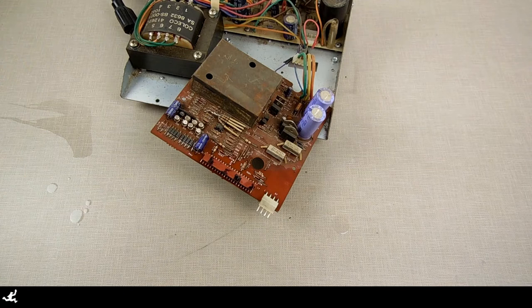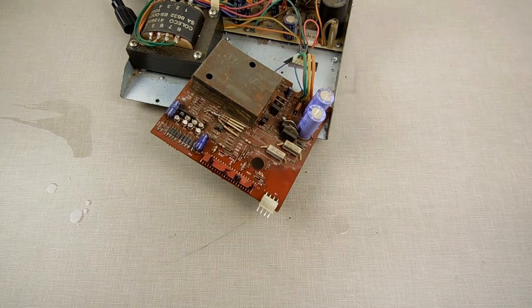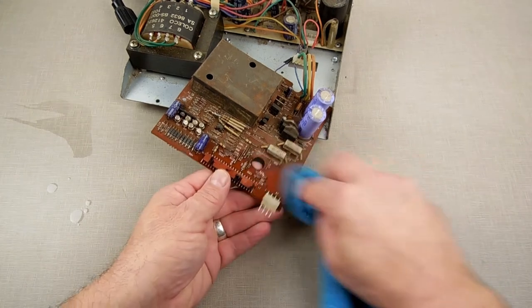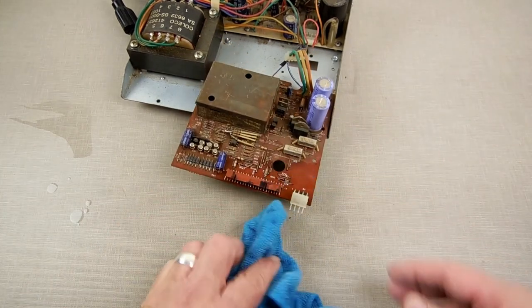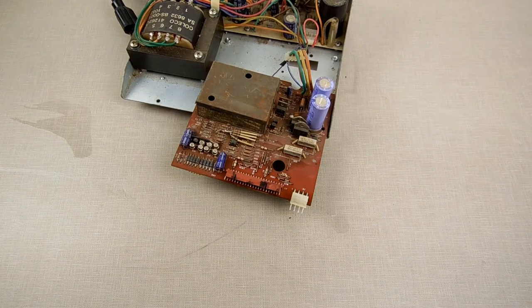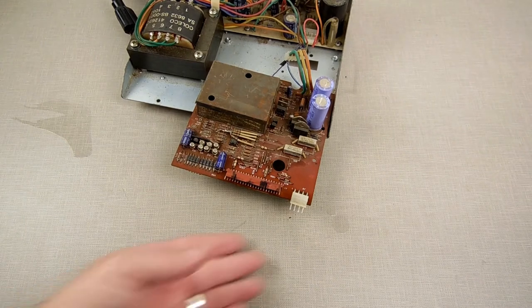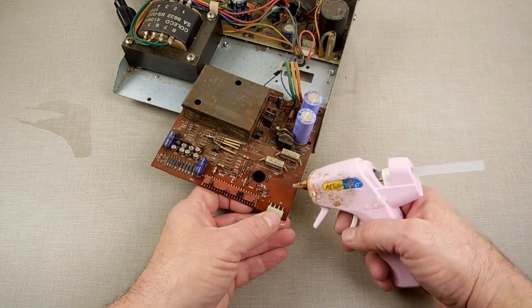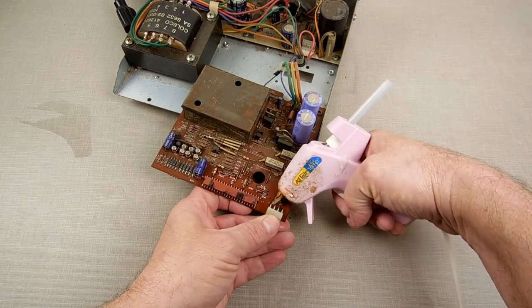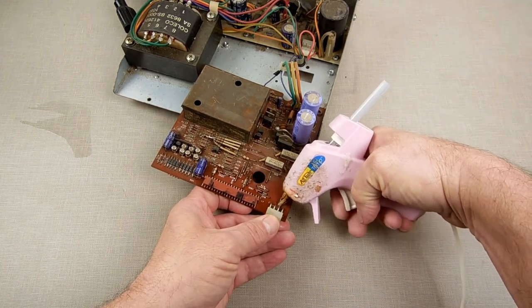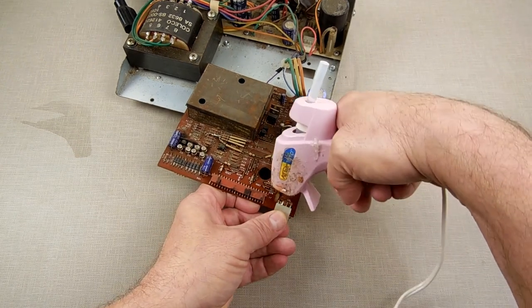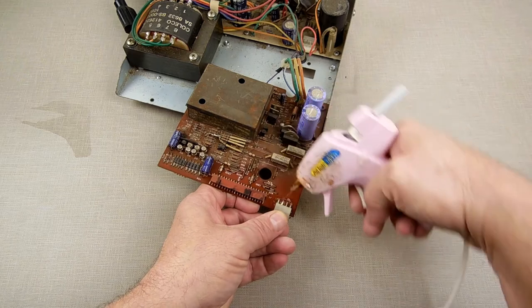All right, now I'll grab my little rag so I can dry it off. It'll evaporate some, but I'm going to dry it off. Now I'm going to take the hot glue gun, hold this where I want it like so, and just really fill this in with some hot glue.